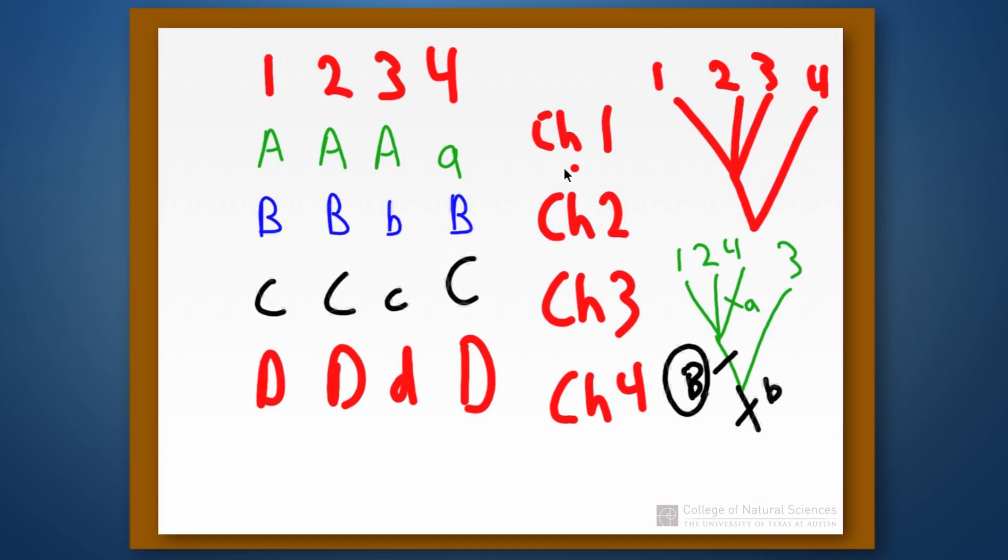And that's going to be more parsimonious than what we have to do up here. Because what we have to do up here is we have to say that there are more changes taking place on this tree than there were on the other tree.